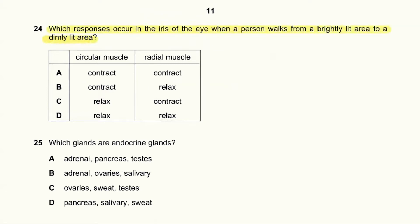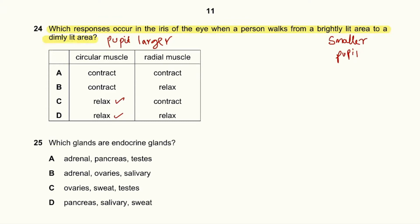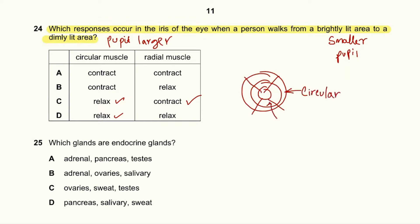Question 24: Which responses occur in the iris of the eye when a person walks from a brightly lit area to a dimly lit area? In a brightly lit area the pupil is smaller; in a dimly lit area the pupil must be larger. To make the pupil larger, the circular muscles must relax and the radial muscles must contract. The circular muscles go around the pupil, while the radial muscles radiate outward.